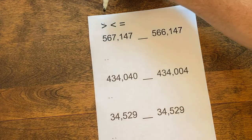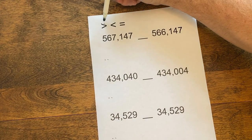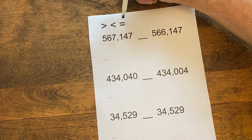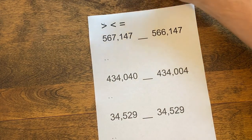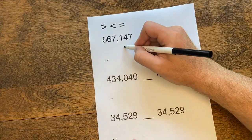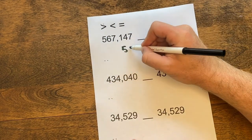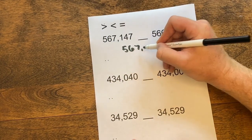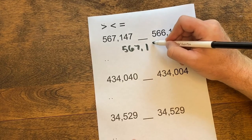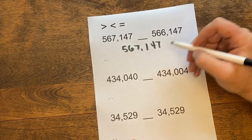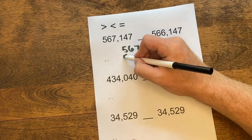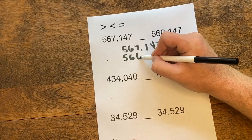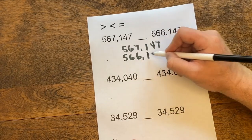When comparing numbers, we use the greater than, less than, or equal to sign. The first thing we want to do is recopy both of the numbers, making sure we write the digits correctly, and making sure we line up each of the place value spots.